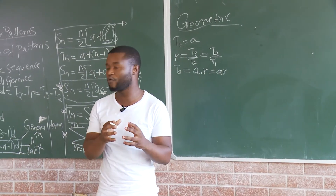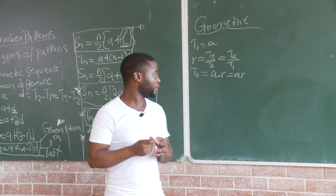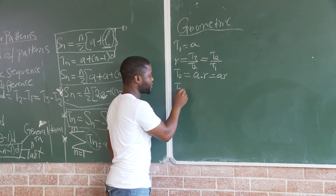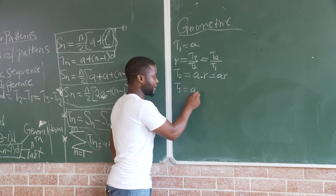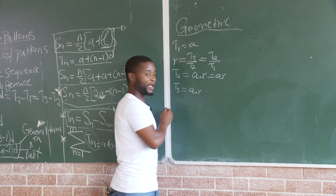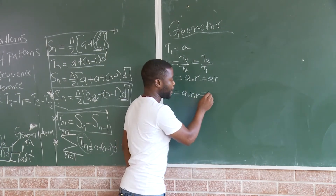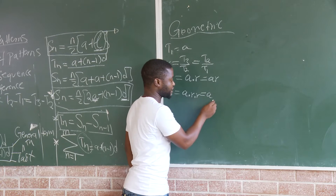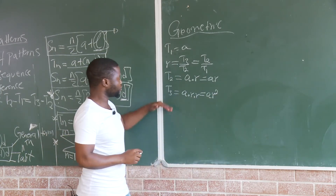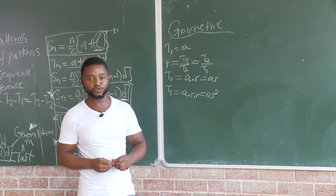And then, if I want to move from T1 to T3, what do I do? I take my first term — remember that our first term we refer to as A generally. So, I multiply that by R and I multiply it by another R. So eventually I'll be left with A·R squared. So generally, T3 will be A·R squared.